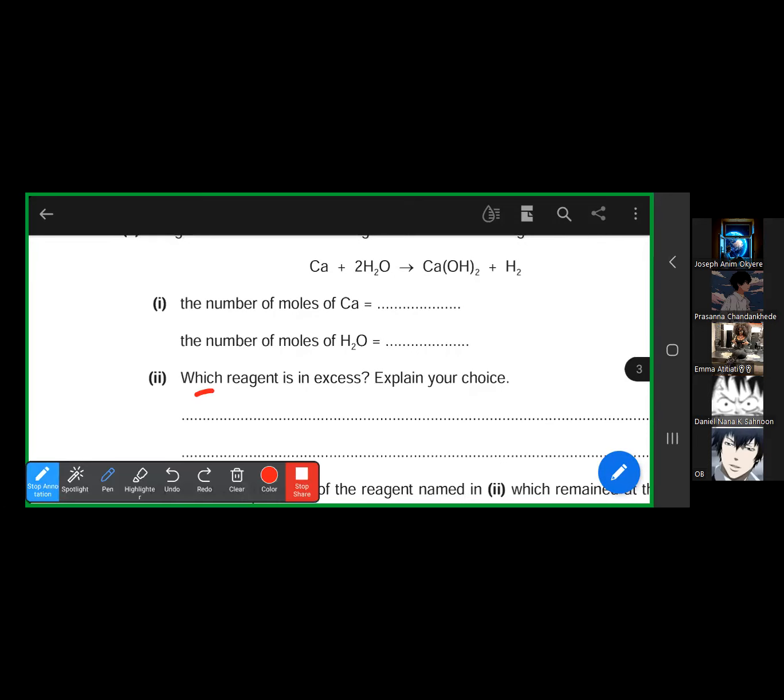Calcium is in excess. Which reagent is in excess? Calcium is in excess, although calcium's moles is 0.12. Water's mole is 0.2, it's limited. Because we have 0.2 divided by two gives 0.1, 0.12 divided by one gives 0.12. 0.12 is bigger than 0.1.